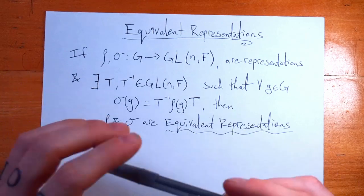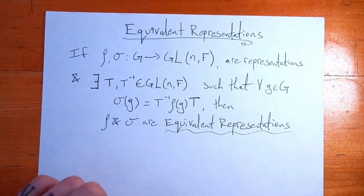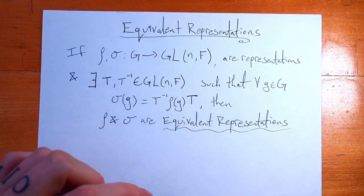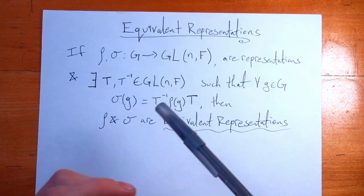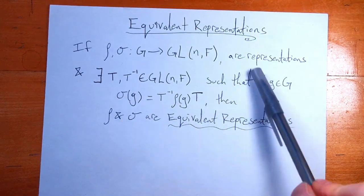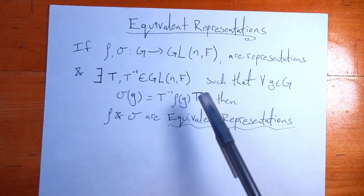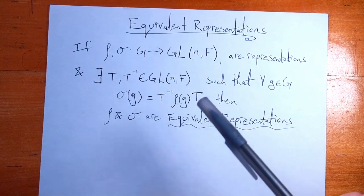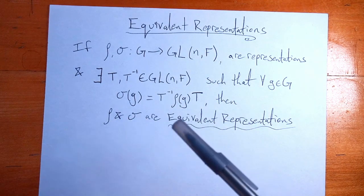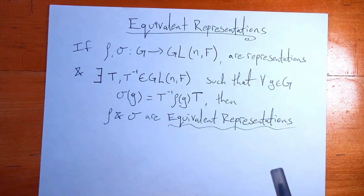Now, checking if two representations are equivalent is a little bit more work. You have to show that there is indeed such a T that is invertible, that we have this similarity equation. But hopefully this video gave you a better idea of what equivalent representations are. And in an upcoming video, I'm going to give some more examples looking into what's going on.